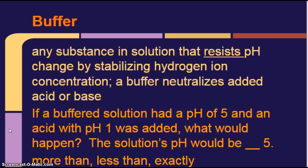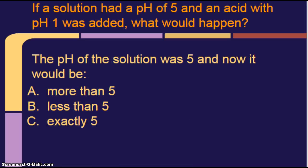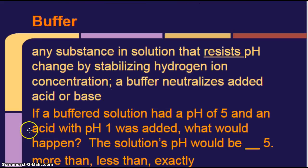If a buffered solution had a pH of 5 and an acid with pH of 1 was added, what would happen? The solution's pH would be more than 5, less than 5, or exactly 5. Now, at the very beginning, I said, okay, we just have a regular old solution, no buffer, and we added acid, and our pH was less than 5. Now, we have a solution with a buffer inside of it, starting out at pH of 5, and we're adding some pH of 1 acid. And what's going to happen?